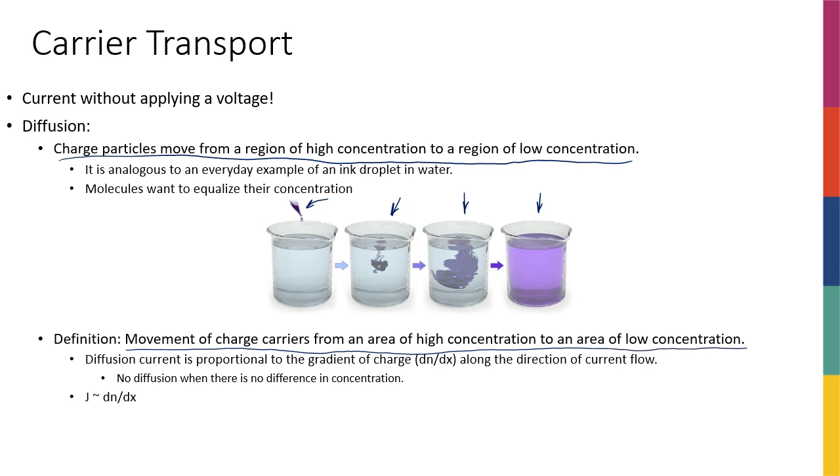So the definition of diffusion is movement of charge carriers from an area of high concentration to an area of low concentration, and it's proportional to the gradient of charge. So if you don't have any kind of gradient in charge, like in the ink example, there is no gradient in the distribution of ink particles. Everything is distributed evenly, so there is no dn over dx. If everything is distributed perfectly constant in a perfectly equal way, then you can imagine that the derivative of distribution is going to be zero. So dn over dx is going to be zero. This is similar with electrons and the electron distribution or charge distribution, free charge distribution in silicon crystals or in semiconductor materials in general.